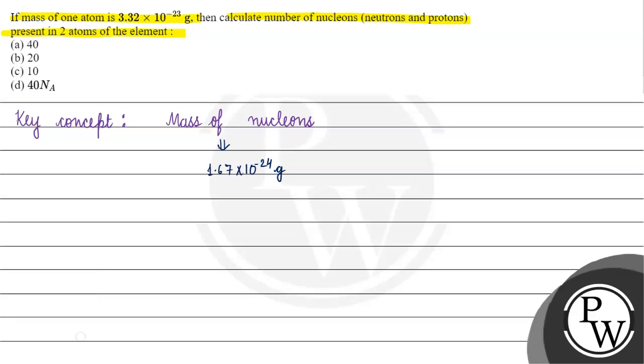Why is that? Because when we have mass of nucleons, we only take mass of neutrons or mass of protons, we don't take the sum of both. So mass of nucleons is 1.67 × 10 to the power minus 24 grams.